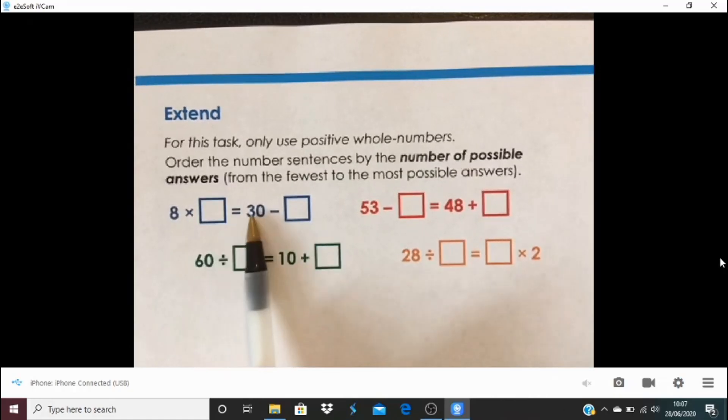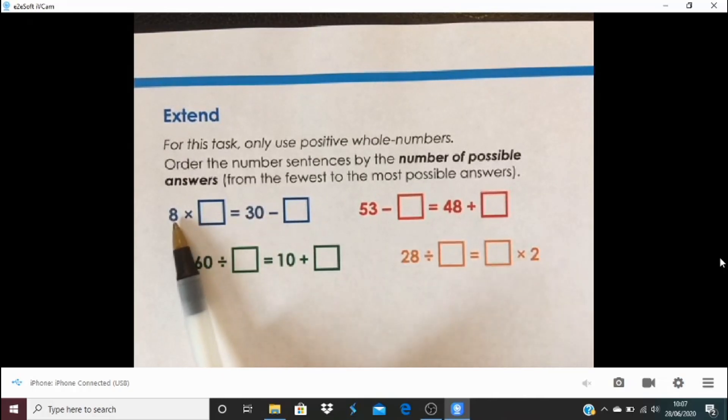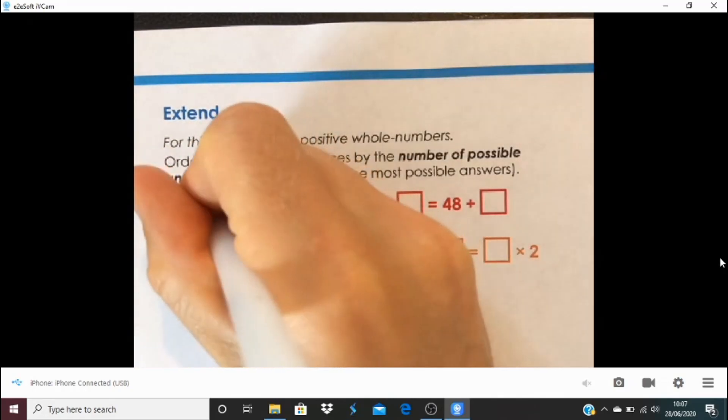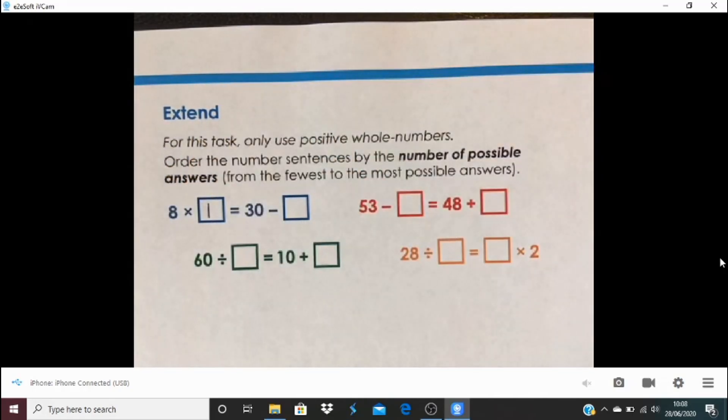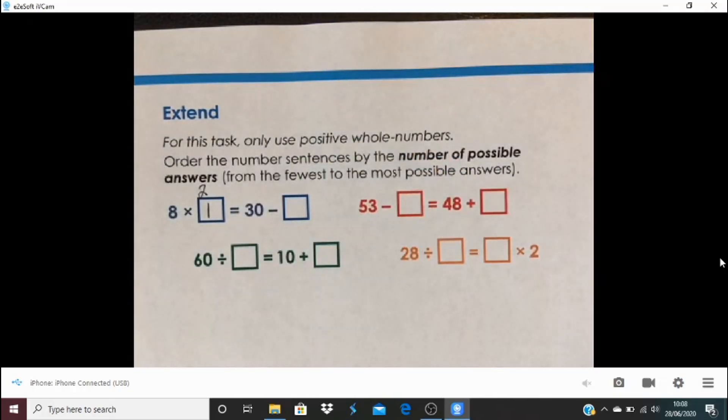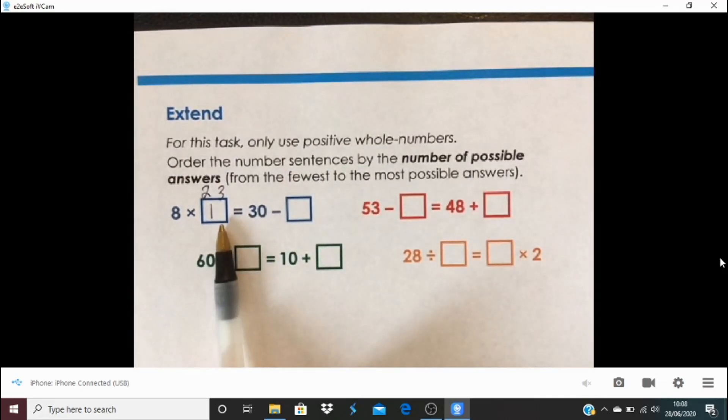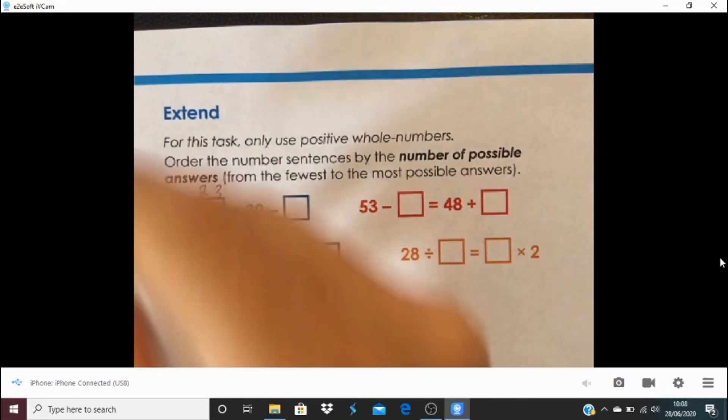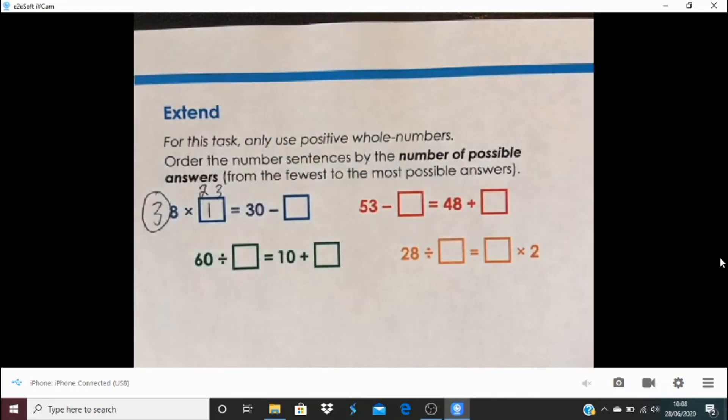So here I've got to make these two sides balanced. I would think about ways that I can do that with positive whole numbers. I'd have to think, how many times can I multiply 8 to make a number that will be less than 30? Because I have to subtract from the 30. So in this box, it could be 8 times 1, that would be 8. And then I could make that by subtracting from 30. It could be 8 times 2, or it could be 8 times 3. But when I do 8 times 4, then I'll have 32, which I can't make by subtracting a positive whole number. So in this example, we have three possible answers.